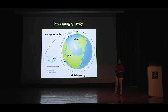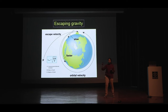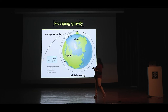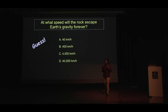That particular velocity — the minimum velocity by which you can do that — is called escape velocity. Escape velocity is given by this formula: the escape velocity is equal to the square root of 2GM/r, where M is the mass of the earth and r is the radius of the earth. It only depends on these two quantities. Let's try to guess: what do you think should be the velocity of the rock if it wants to just escape earth's gravity forever?